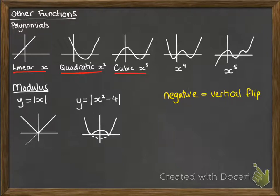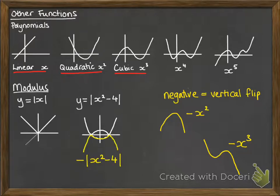And also, if we are doing a negative of any of these, say we wanted to do negative x squared or negative x cubed, then we would just flip the whole graph vertically. So a minus x squared and a minus x cubed go in that direction. Also, if we were doing minus of the modulus, it's being reflected in the x-axis again.